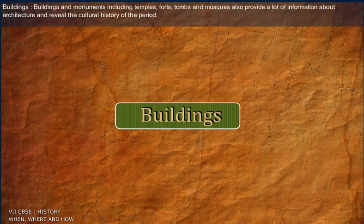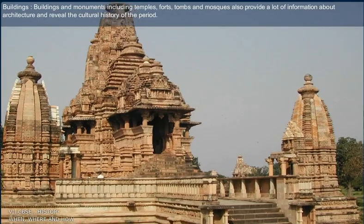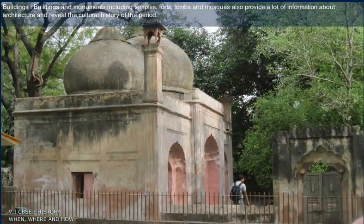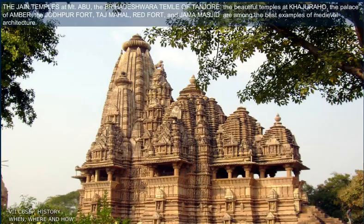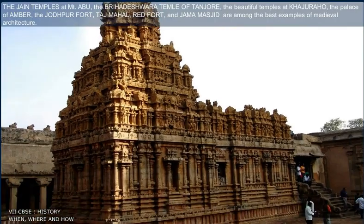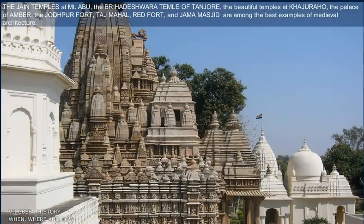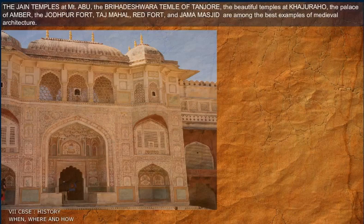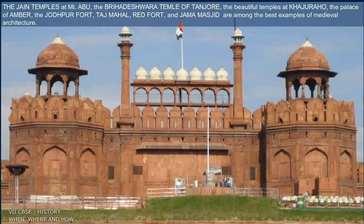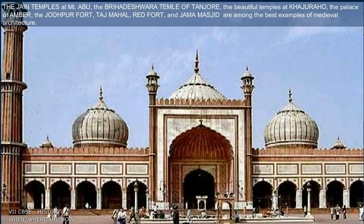Buildings and monuments including temples, forts, tombs and mosques also provide a lot of information about architecture and reveal the cultural history of the period. The Jain temples at Mount Abu, the Brihadeswara Temple of Tanjore, the beautiful temples at Khajuraho, the Palace of Amber, the Jodhpur Fort, Taj Mahal, Red Fort and Jama Masjid are among the best examples of medieval architecture.